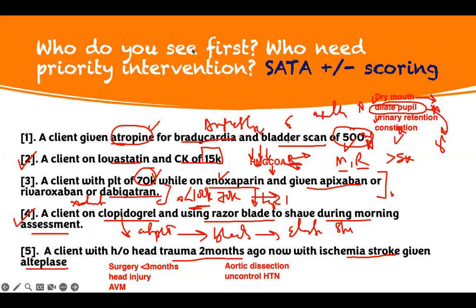This patient is in trouble. A client with a head injury two months ago, now with ischemic stroke, given alteplase — they're going to bleed to death. So for these questions, patients 2, 4, and 5 need to be seen. Prioritization using your pharmacology — cardio pharmacology — helps you find and figure it out. For this next-generation question format, if you know the answer, you pick it. If you don't, don't guess. There are three answer choices here and you have five questions.